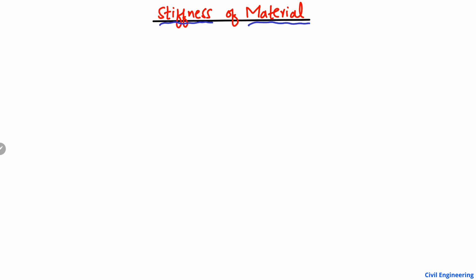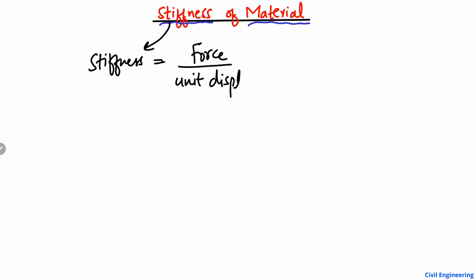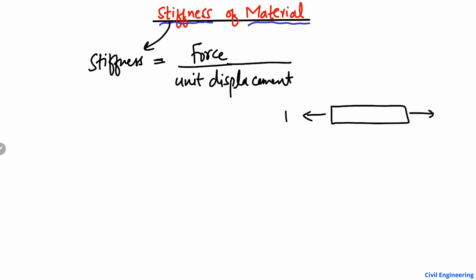First of all, to define stiffness: stiffness is basically the ratio of the force divided by the unit displacement. To explain this terminology, consider an example. There is a rod and you apply a tension load T on this rod, and you have some stretch in this rod.